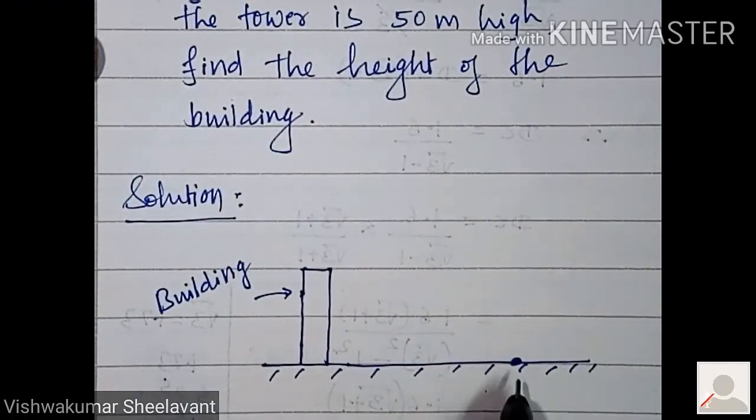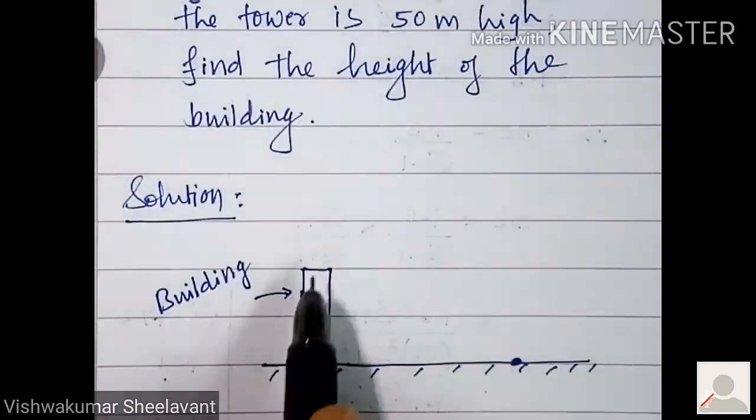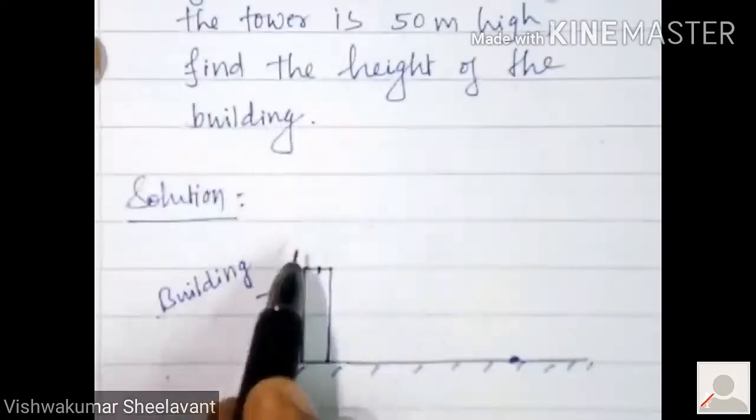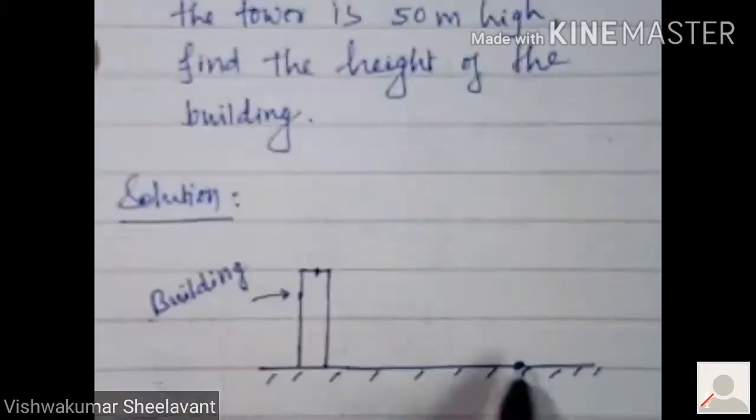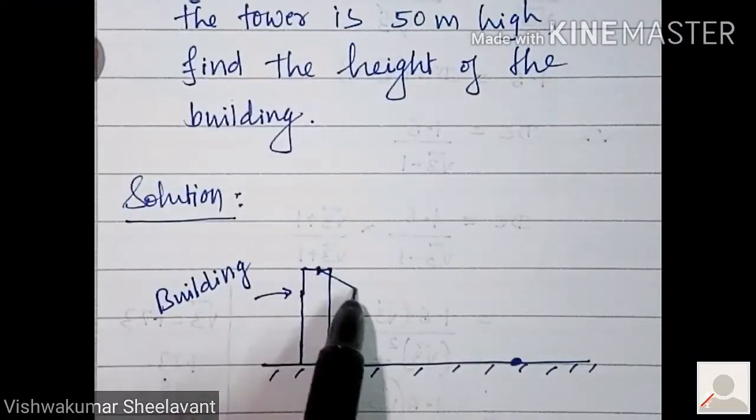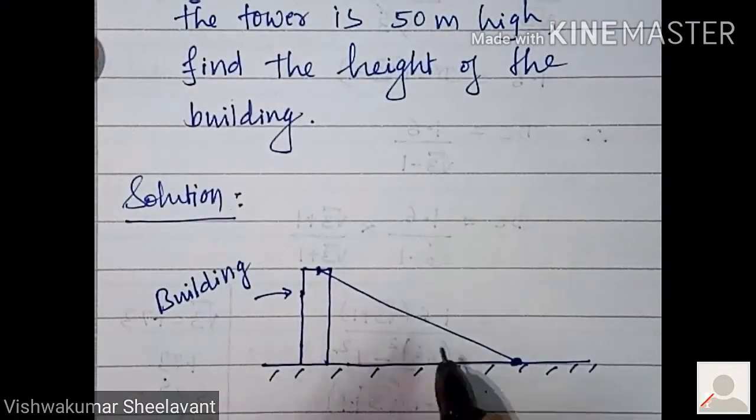From the foot of the tower, the angle of elevation of a building is 30 degrees. That means from the foot of the tower, if you see the building top, angle of elevation is 30 degrees.